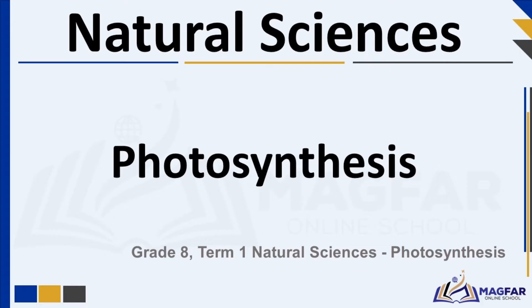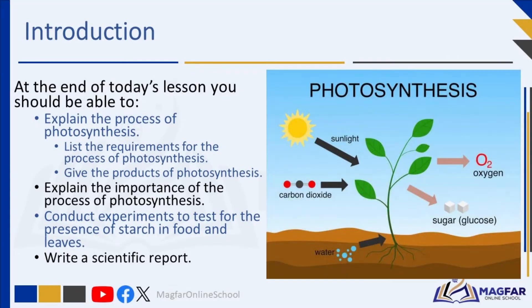Today we are going to talk about photosynthesis. At the end of today's lesson, you should be able to explain the process of photosynthesis, list the requirements for the process of photosynthesis, give the products of photosynthesis, explain the importance of the process of photosynthesis, conduct experiments to test for the presence of starch in food and leaves, and write a scientific report.